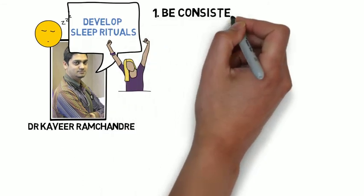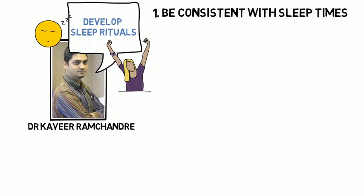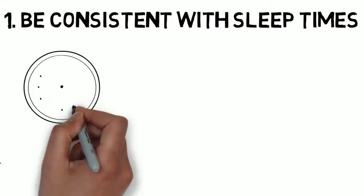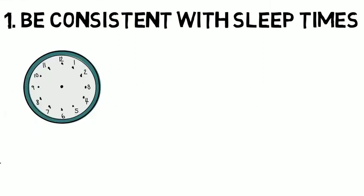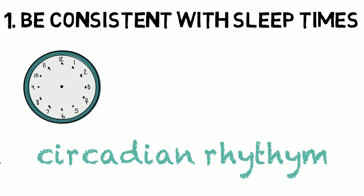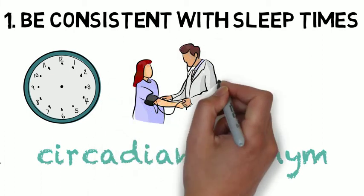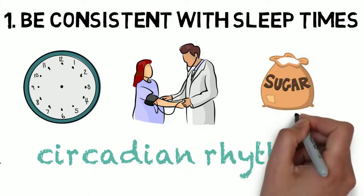Number one, try to go to bed and wake up at the same time every day. This will prime the body's internal clock or circadian rhythm to naturally optimize your sleeping and waking schedule. This practice helps with blood pressure control and maintaining stable blood sugar levels.